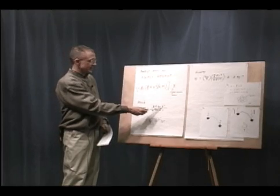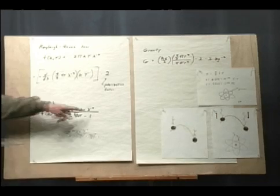You can find it in here, hc over lambda. Here we have lambda to the wavelength to the minus fifth power.